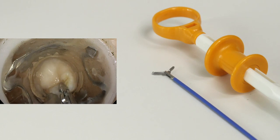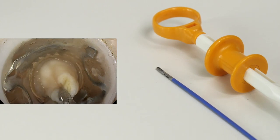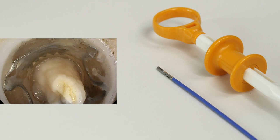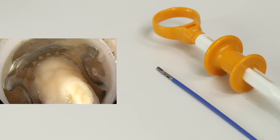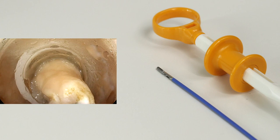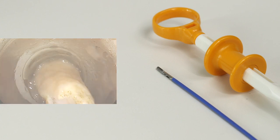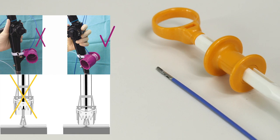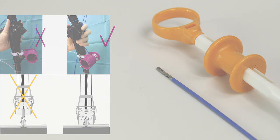When using the FTRD grasper, it must be ensured that the instrument tip is sufficiently drawn into the application cap and remains in this position while the clip is released. Otherwise, the clip may be applied to the instrument shaft or parts of the branches, and the instrument may become attached to the tissue as a result.